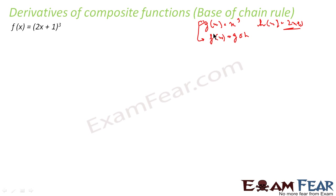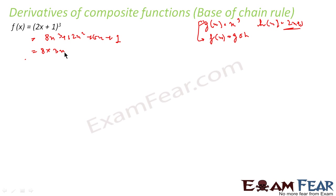One approach is the crude approach — I can just expand (2x+1)³, which becomes 8x³ + 12x² + 6x + 1. Taking the derivative: 8x³ becomes 24x², 12x² becomes 24x, 6x becomes 6, and the derivative of the constant becomes 0.